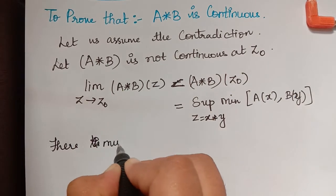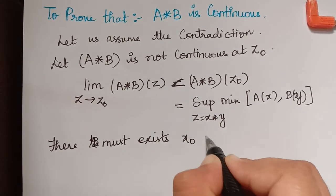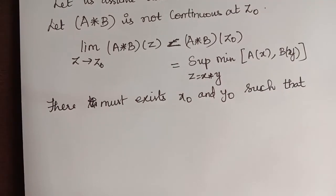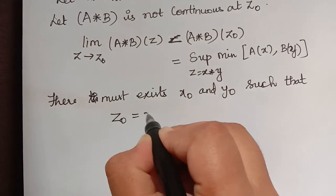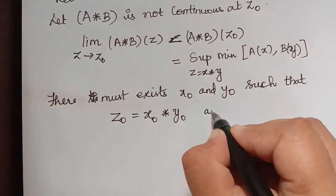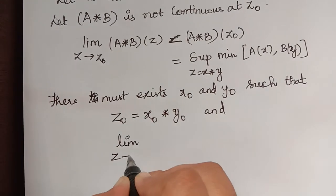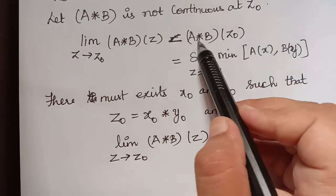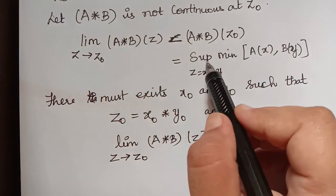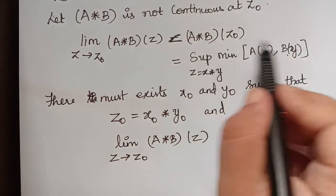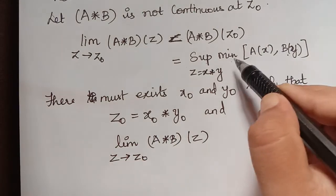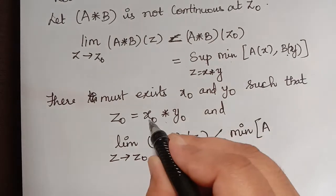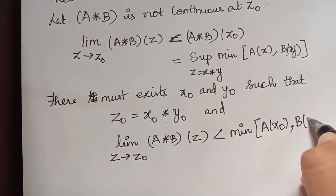Then there must exist some x₀ and y₀ such that z₀ = x₀★y₀. When we take the limit as z tends to z₀ of a★b(z), it will be strictly less than a★b(z₀), which equals the supremum of the minimum. Therefore, the limit is less than the minimum of a(x₀) and b(y₀).